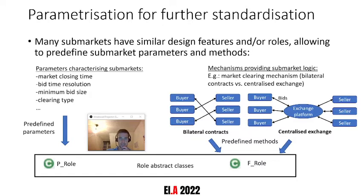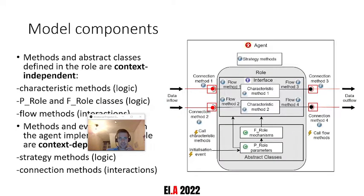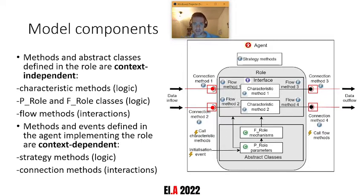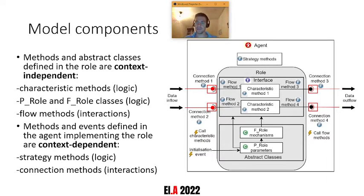Now that we've explained the purpose of these abstract classes, we can see how all elements fit together. The role implements interfaces and abstract classes assigned to it, and within the interface are the characteristic methods that define the main logic of the role. These characteristic methods can be influenced by predefined market mechanisms, but also by the agent itself and the context — that's where the strategy methods come in. The characteristic methods also need inputs and outputs with a context-independent format defined by flow methods, while connection methods determine which agents a role communicates with based on context.